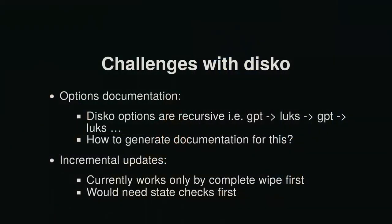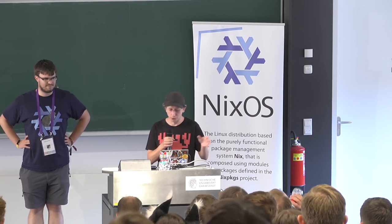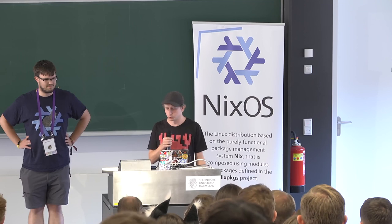What are the problems with Disco? Because the options are recursive — you can have a GPT partition table, a LUKS partition inside, then another GPT partition table — it's hard to generate documentation in the way we do for NixOS modules. We also use this weird polymorphic type syntax. Yesterday we asked Robert Hansen, who is a magician with the Nix module system, and he didn't even believe we built this type. We're still wondering how to generate documentation for this — ideally something equivalent to the NixOS options reference. Another problem: currently Disco only works by completely destroying your partition table first and then reinstalling it. I want to add state transitions so it would check your current setup and only do non-destructive operations.